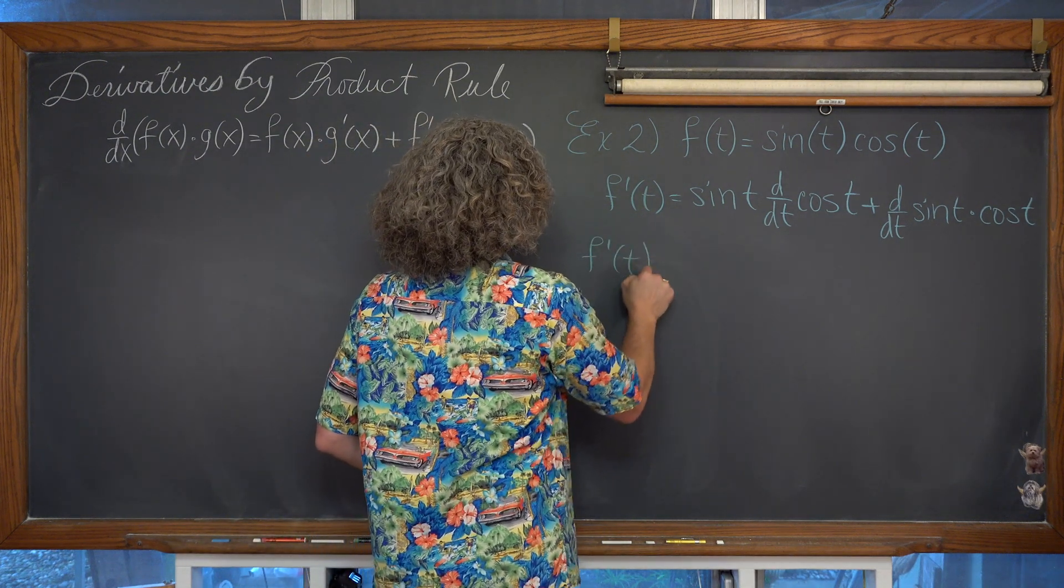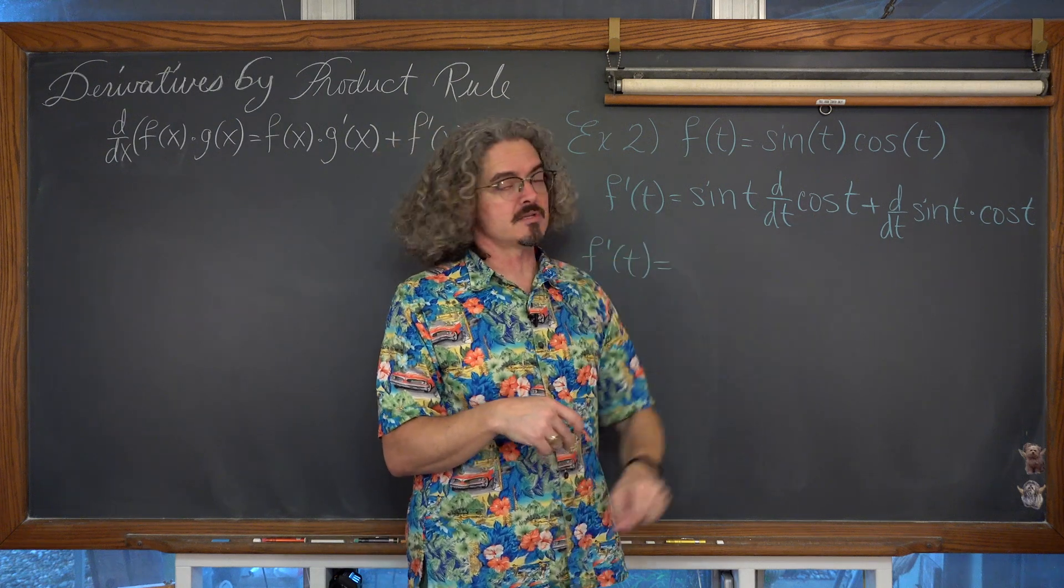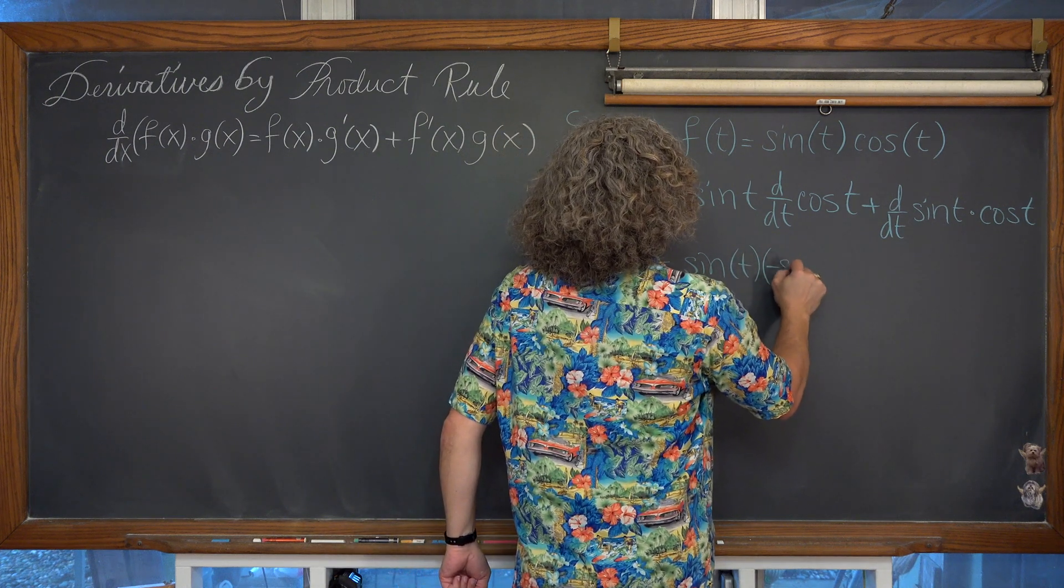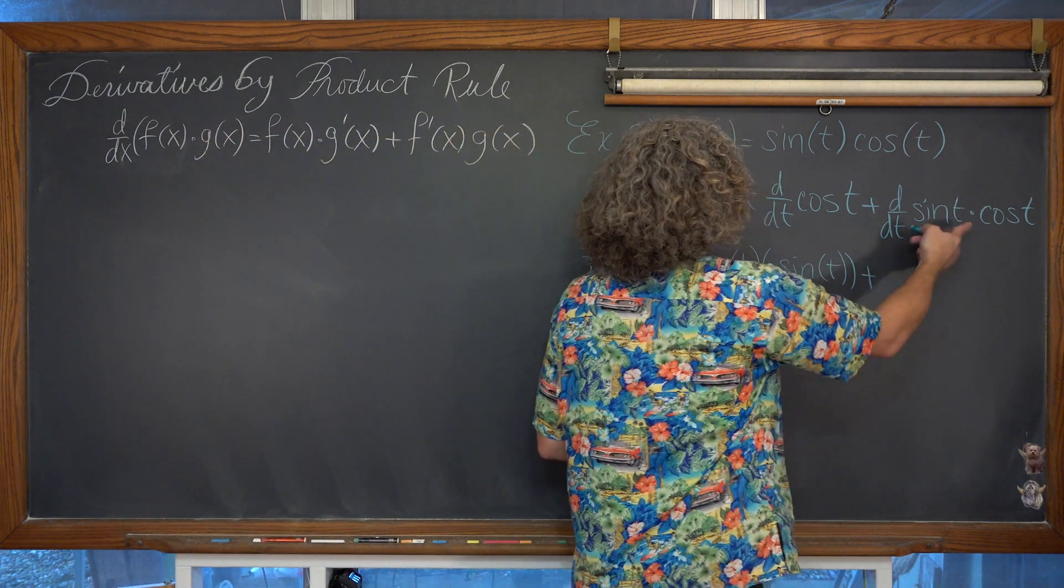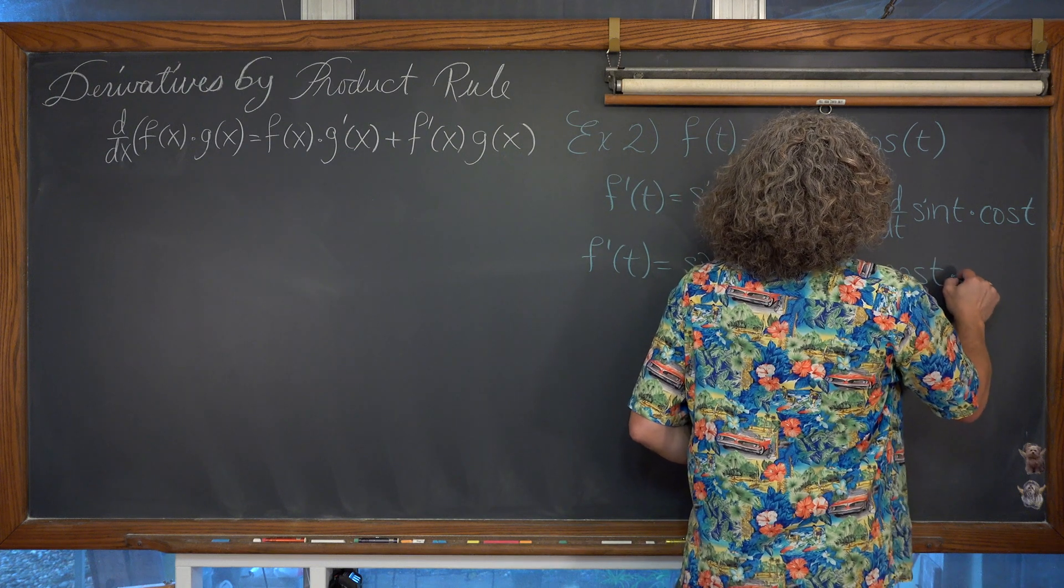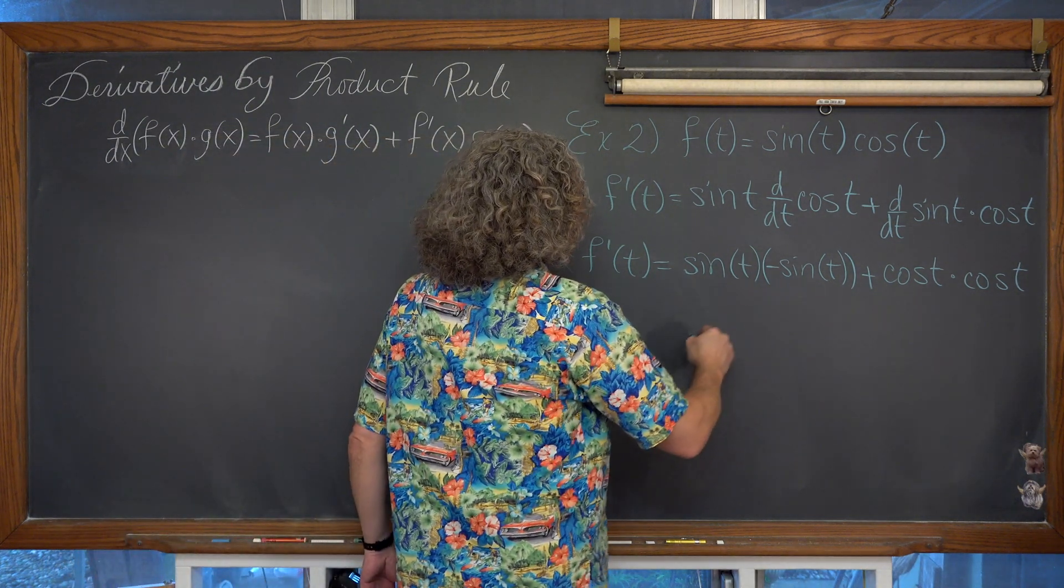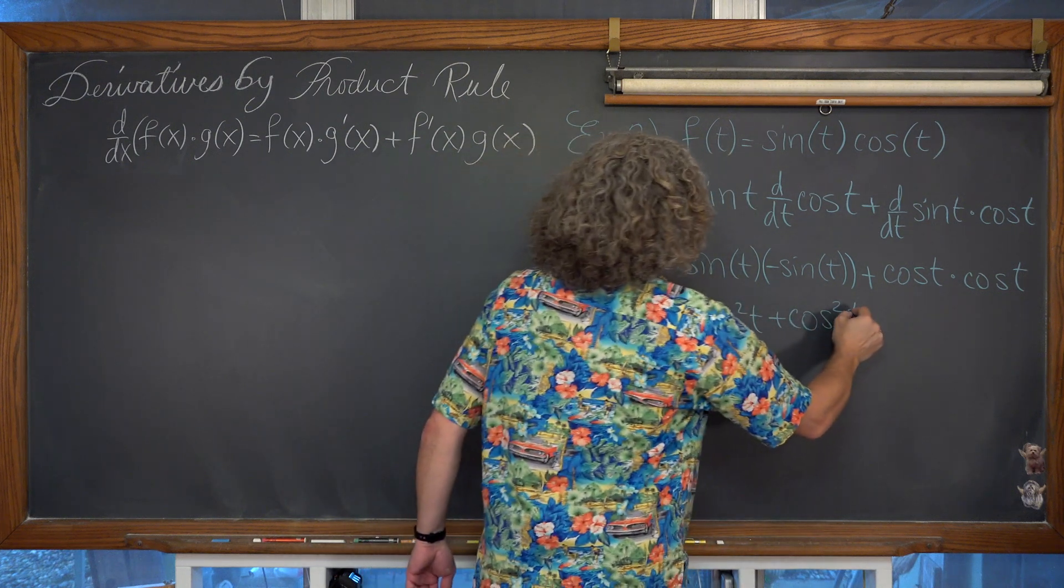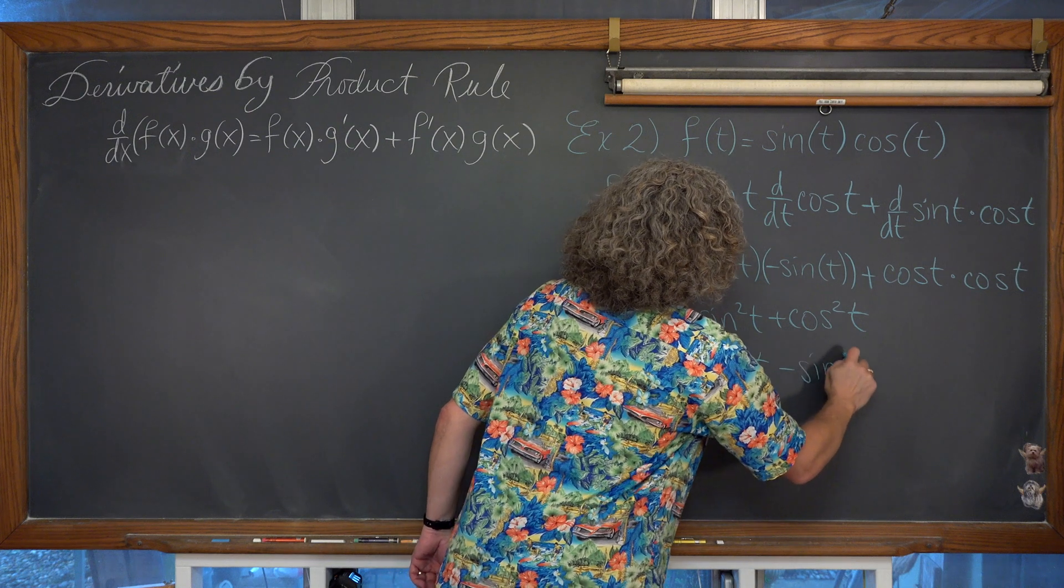We just learned these derivatives in the previous section. We have f'(t) = sin(t) times the derivative of cosine. The derivative with respect to t of cos(t) is -sin(t). So we have sin(t) times -sin(t). Plus the derivative of sin(t) with respect to t is cos(t). And then we have that other cos(t) factor. That gives us -sin²(t) + cos²(t). And I'm going to change the order around, giving us cos²(t) - sin²(t).